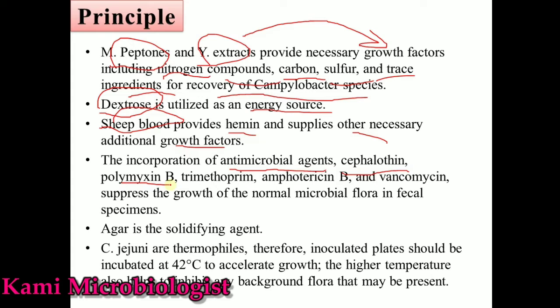The antimicrobial agents include Cephalothin and Polymyxin B — some are gram-positive inhibitors and some are gram-negative bacterial inhibitors. Amphotericin B acts as a fungal inhibitor, and vancomycin inhibits gram-positive bacteria. These antibiotics together inhibit gram-positive, gram-negative, and fungal organisms, allowing only Campylobacter bacteria to grow. Agar acts as a solidifying agent and NaCl maintains the osmotic balance.